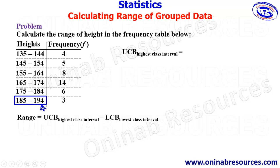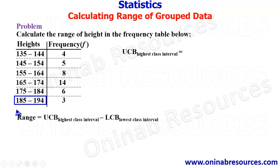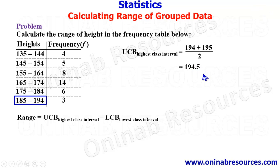To find the upper class boundary, we look at the upper class limit of the highest interval, which is 194. Assuming the next class interval begins at 195, we find the average of 194 and 195: (194 + 195) ÷ 2 = 194.5. So the upper class boundary of the highest class interval is 194.5.